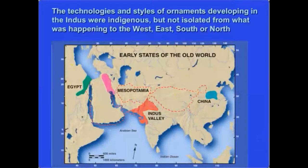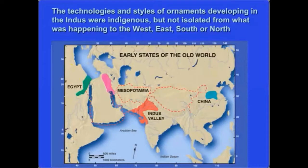The technologies and styles of ornaments that developed in the Indus, I argue, are indigenous — they did not come from somewhere else and were not originating in other regions. And yet the Indus civilization was not isolated. There were connections to Central Asia, Arabia, North Africa, Mesopotamia, Central and South India, Eastern parts of South Asia, and possibly even as far as China. So there are lots of connections happening over a long history of the region.